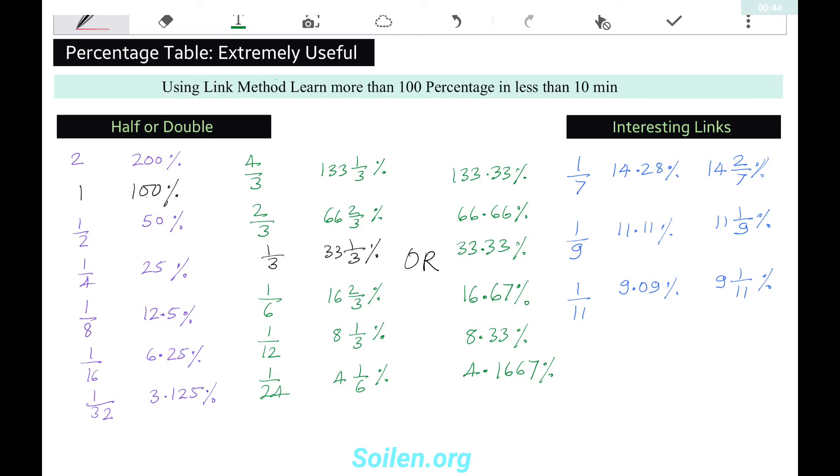We can learn many percentages by doing half or double. If 1 is 100%, then twice of that, 2, is 200%, 4 is 400%, and so on.